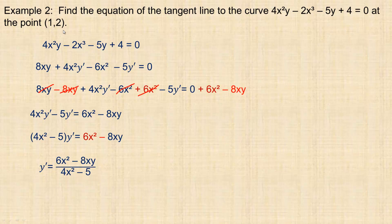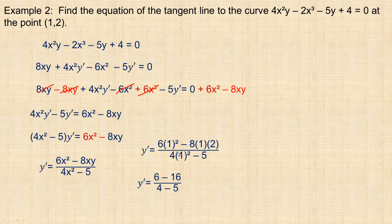Now I want to find the equation of the tangent line at the point (1, 2). So x equals 1 and y equals 2. I substitute 1 in place of x and 2 in place of y. 1 squared is 1 times 6 is 6; minus 8 times 1 times 2 is negative 16; denominator: 4 times 1 squared is 4. On top: 6 minus 16 is negative 10. Denominator: 4 minus 5 is negative 1. So the slope of the tangent line is 10.